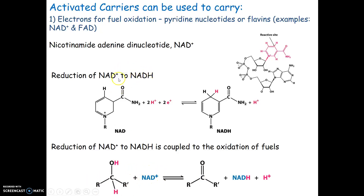Why do we need coenzymes — small molecules that help enzymes do oxidation-reduction? Remember, our enzymes have to remain the same from beginning to end; that's part of the definition of being a catalyst. If the enzyme catalyzes an oxidation reaction, the substrate is oxidized, which would mean the enzyme would have to be reduced, and therefore it would no longer be the same as how it started. So small molecules are added as coenzymes to accommodate that reduction. That's the role NAD+ plays.